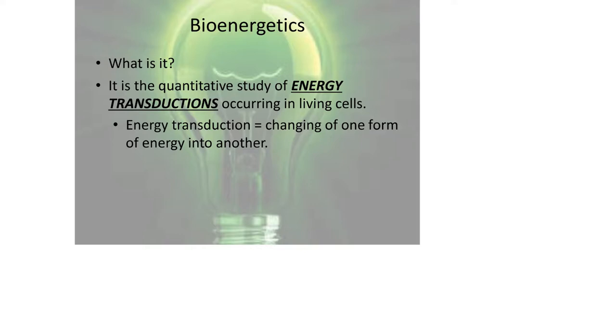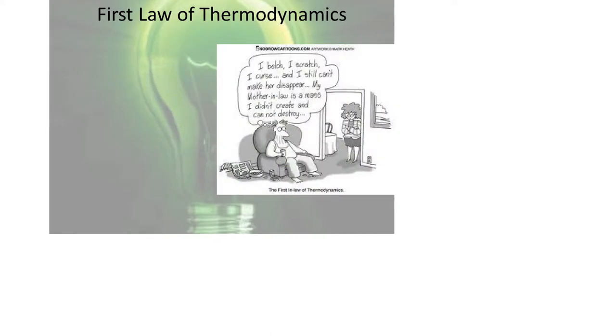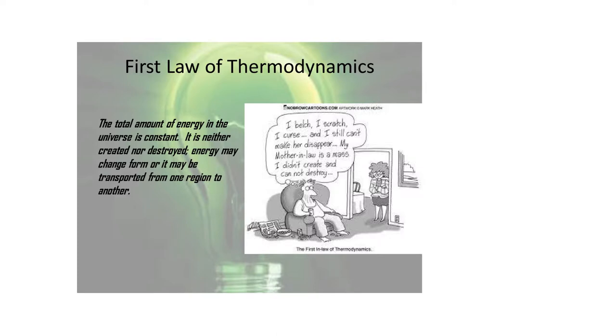The first law of thermodynamics: the total amount of energy in the universe is constant. It's not an open system, it's a closed system. So you can't create it or destroy it, you can only change it from one form to another form. What about the second law of thermodynamics? The entropy of the universe is constantly increasing.